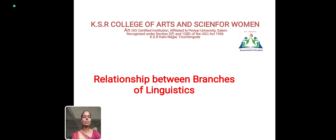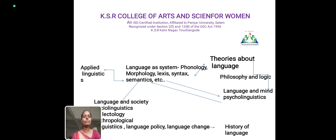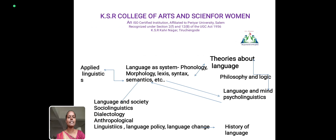Relationship between branches of linguistics — here is a flow chart for your reference. Applied linguistics covers language as a system of phonology, morphology, lexis, syntax, and semantics. Language and society includes sociolinguistics, used in dialectology, anthropological linguistics, language policy, and language change. History of language is also included. Language and mind covers psycholinguistics, and psychology in a logical manner. Normally, we are using language and linguistics.